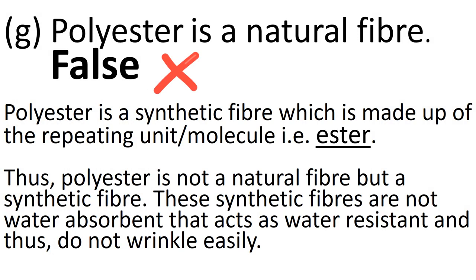Statement G: Polyester is a natural fiber. Students, polyester is a synthetic fiber which is made up of a repeating unit or molecule that is ester. Thus, polyester is not a natural fiber but a synthetic fiber. These synthetic fibers are not water absorbent — they act as water resistant and do not wrinkle easily. Hence, polyester is a natural fiber is a false statement.